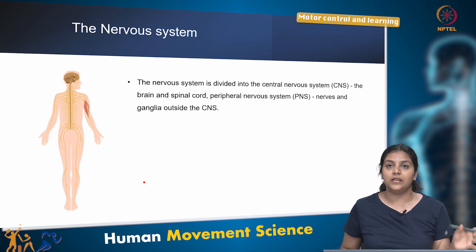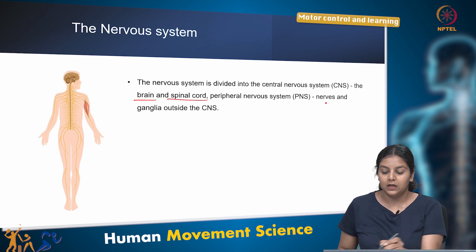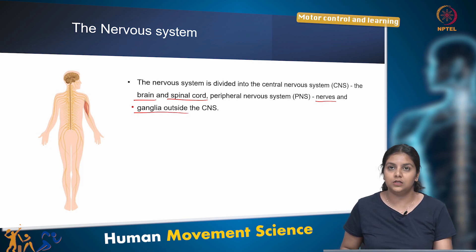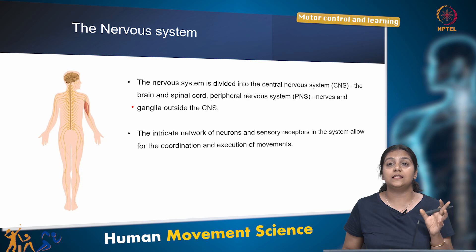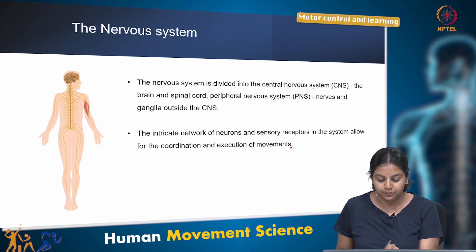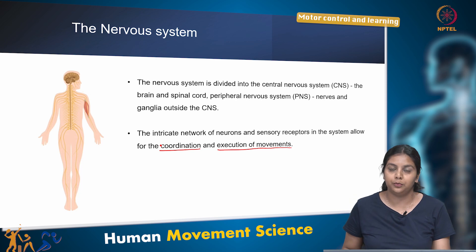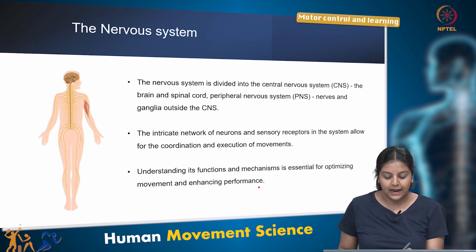The nervous system is divided into the central nervous system, which consists of the brain and spinal cord, and the peripheral nervous system, which consists of the nerves and ganglia outside the central nervous system. This intricate network of neurons and sensory receptors allows for the coordination and execution of movements. Understanding its function and mechanisms is essential to optimize movement and enhance performance.